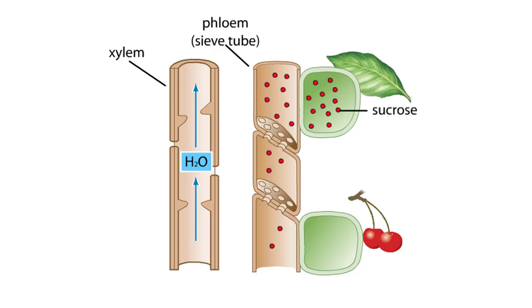Two types of cells, source cells and sink cells, play roles in the transport of solutions in the phloem.